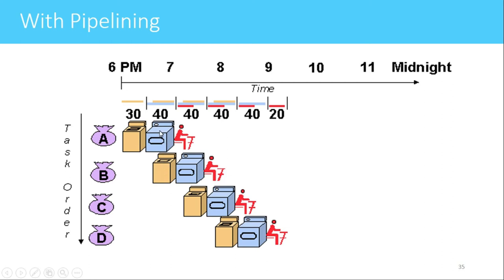Once customer A's clothes are dried, they are ironed by the laundry man. At the same time, customer B's washed clothes are given to the dryer, and customer C's clothes are placed into the washing machine. In this way we can implement pipelining and see that the time required for all four tasks is reduced compared to the previous case, improving the throughput of the system.